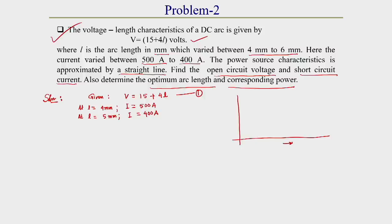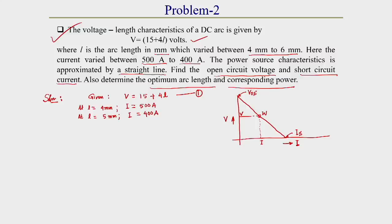Power source characteristics represents the voltage versus current region, approximated here as a straight line. This line defines the short circuit current on the current axis and the open circuit voltage on the voltage axis. For a particular voltage V, the working point W gives the corresponding welding current, which can be easily calculated using the procedure already discussed.